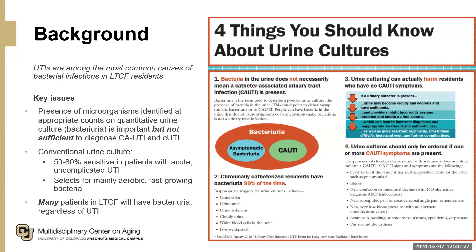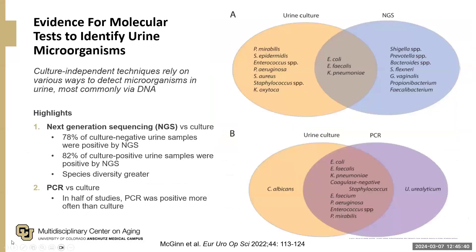There are limitations to conventional urine culture. Some studies report 50–80% sensitivity in detecting uropathogens in people with acute uncomplicated UTI. Traditional urine culture techniques select for aerobic, fast-growing bacteria — which are overwhelmingly the most common bacteria causing UTI. But there are some limitations, and I'm not surprised some people have started investigating alternate technologies for identifying microorganisms in the urine.